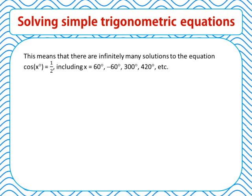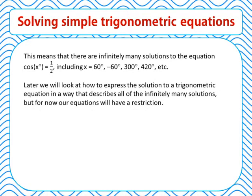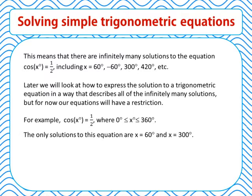This means there are infinitely many solutions to the equation cos of x equals 1 half, including x equals 60, negative 60, 300, or 420 degrees. Later we will look at how to express this as a general solution. But for now, our equations will have a restriction — for example, solving cos of x equals 1 half where x is between 0 and 360 degrees, which gives only two solutions: x equals 60 degrees or x equals 300 degrees.